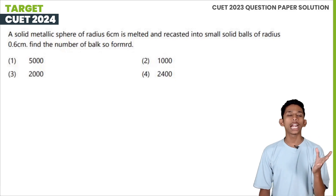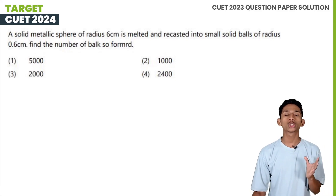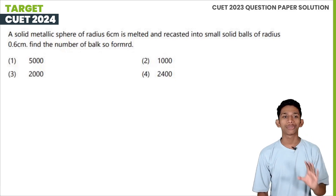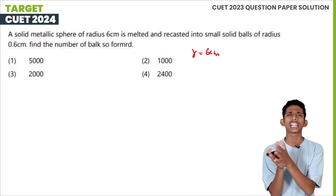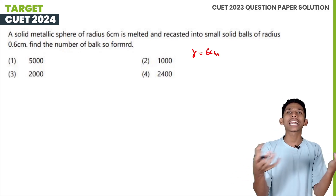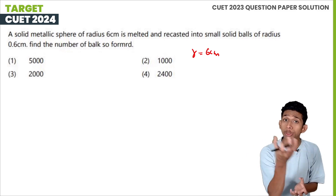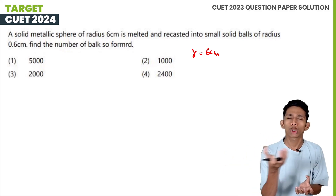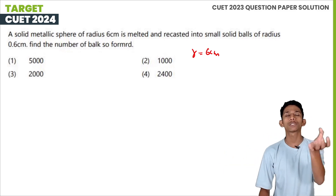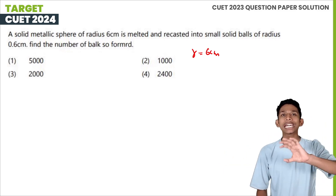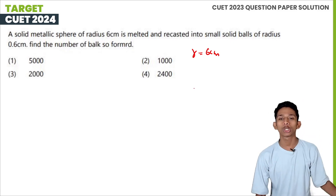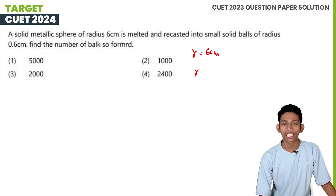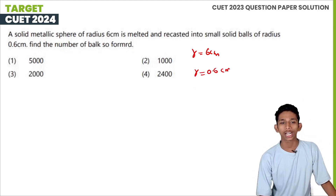If you have a solid metallic sphere of radius 6cm, and you have small balls — each a small sphere of radius 0.6cm — you need to find how many such small spheres can be formed.